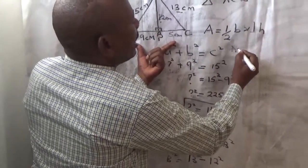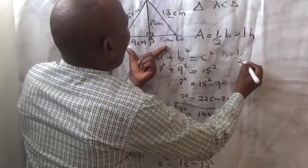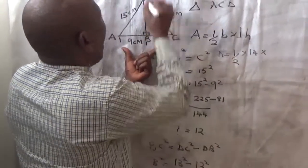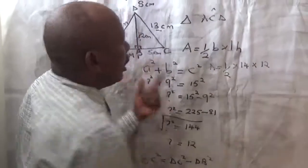So, we substitute this formula a half times. This is 14 centimeters times height, which is 12.